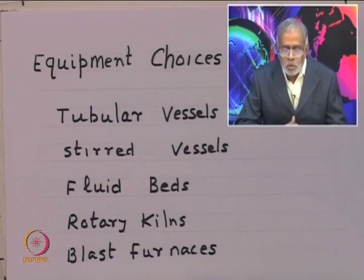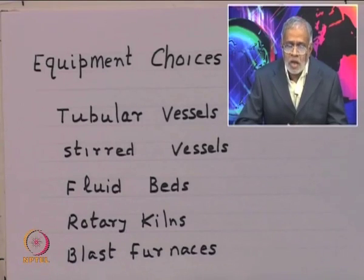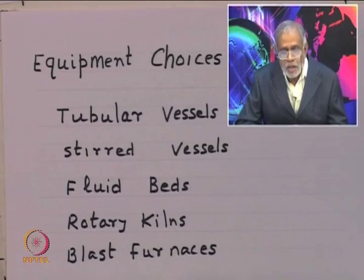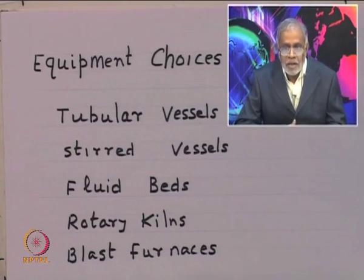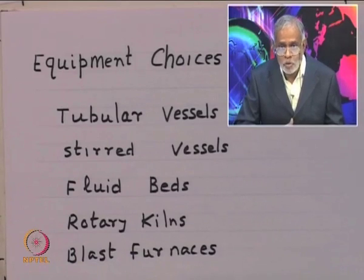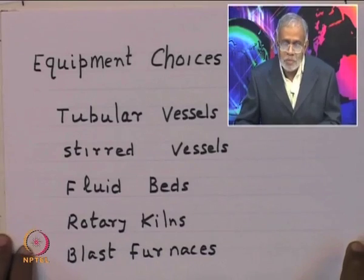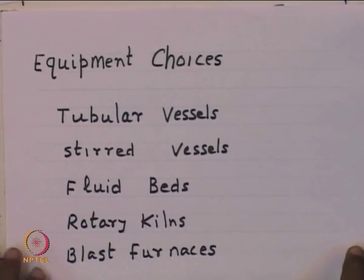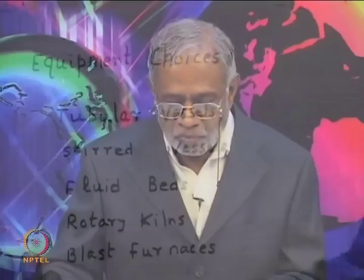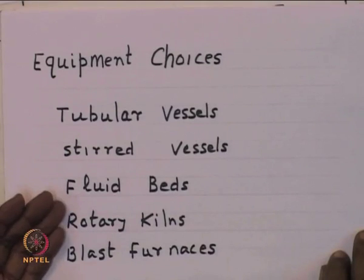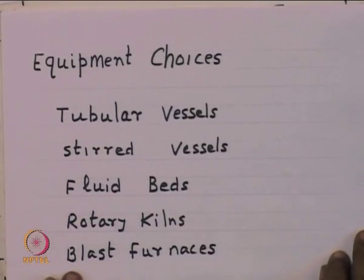Then you have fluid beds, which you see in catalytic cracking, and rotary kilns common in the lime industry. Steel making has been known for a very long time — blast furnaces are such equipment. What we try to do in this course is to see how we can use our understanding of chemical reaction to build and design equipment, see how they operate, how they can be operated better, and how best we can optimize operations, so that we produce our products safely, productively, and economically — delivering useful value to society.